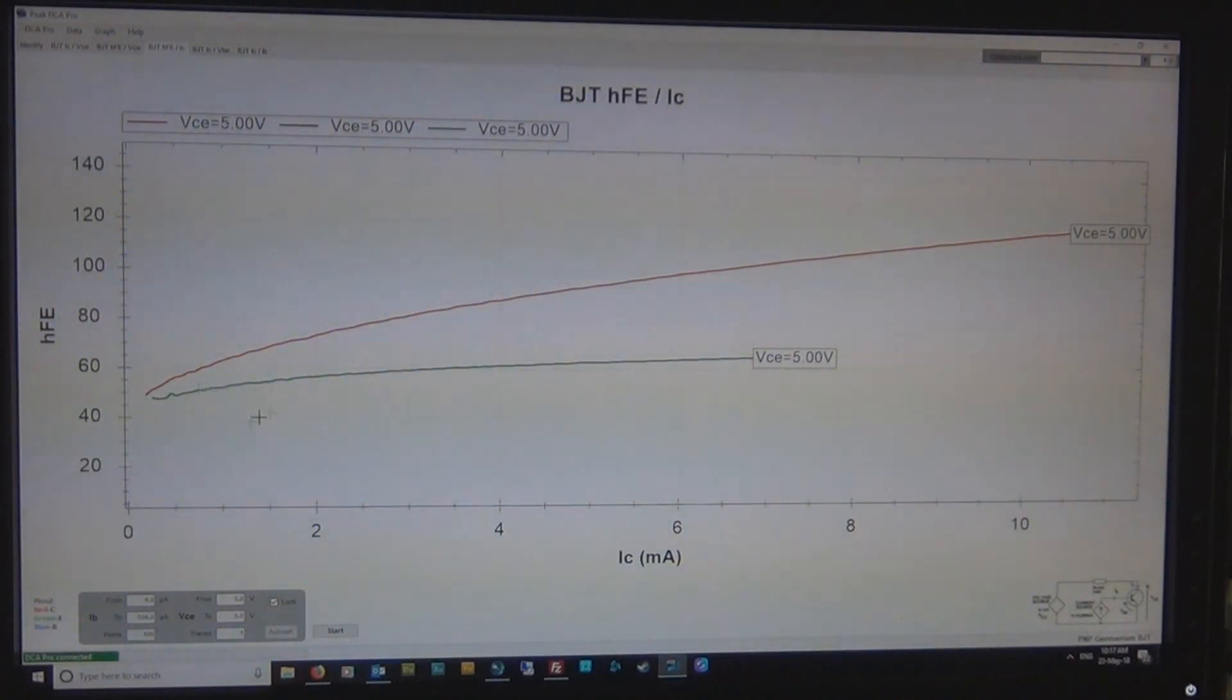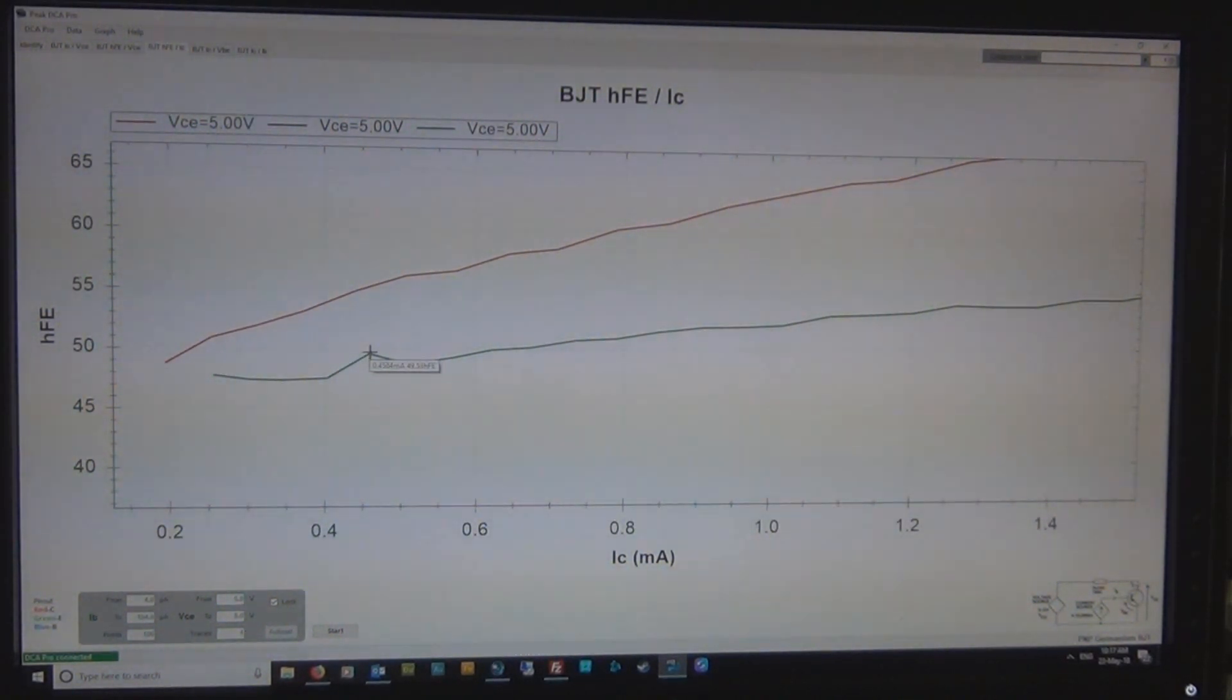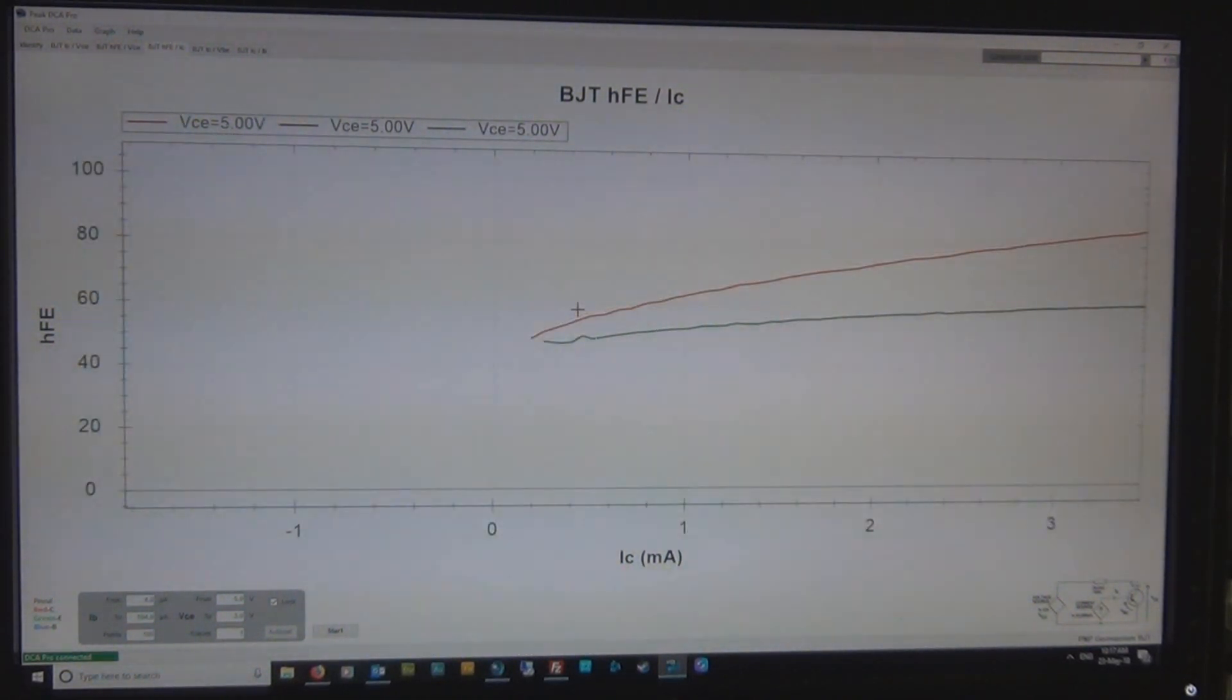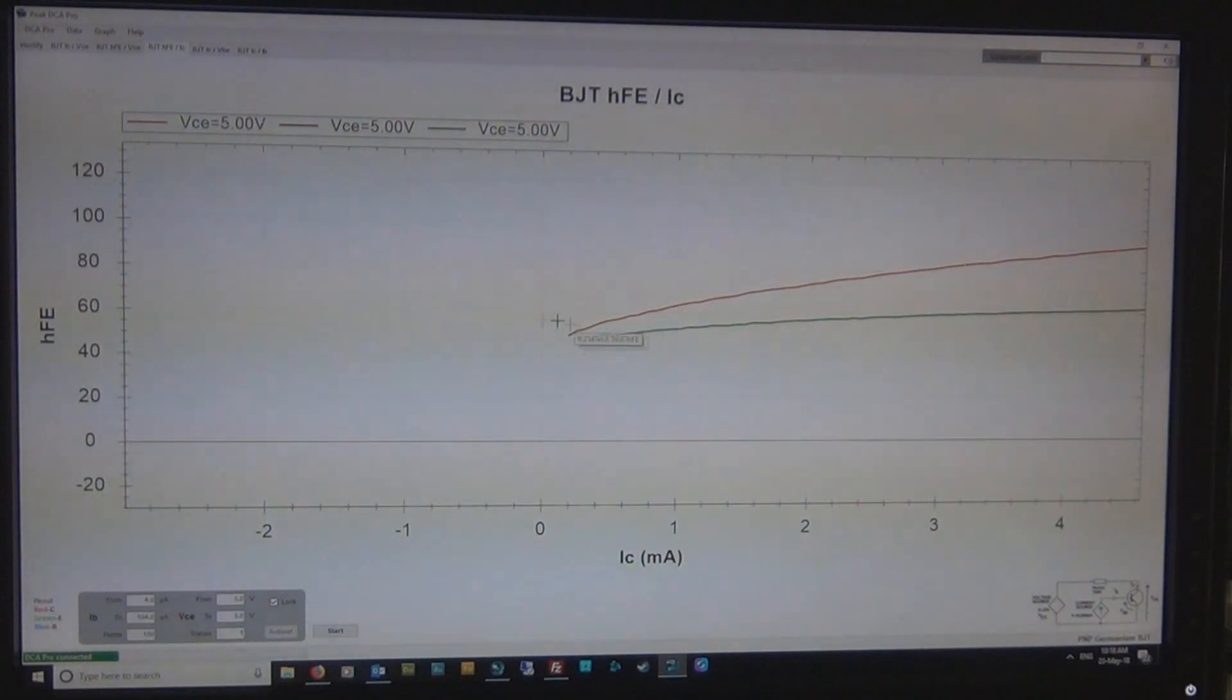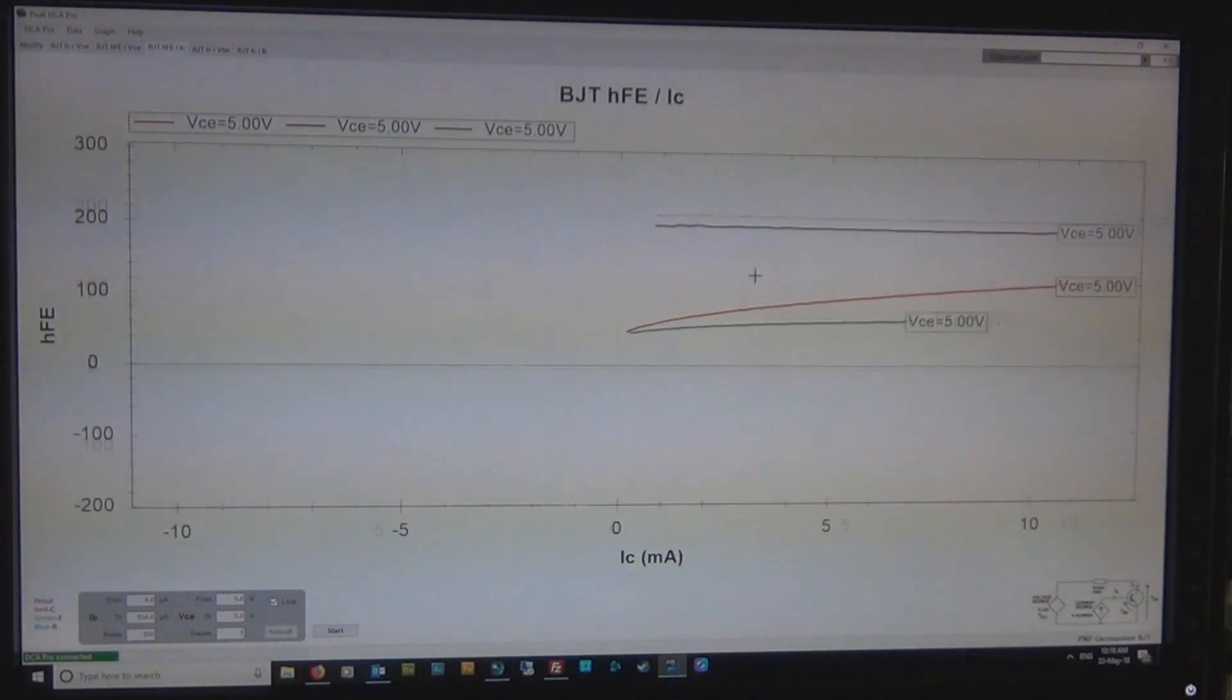And it's funny how you actually have some instability at the start with both graphs. You can see you get peaks and things at the initial part of the test. Maybe the transistor's not really designed to be run so low, or have such low base current. So anyway, that's pretty much it for that video.